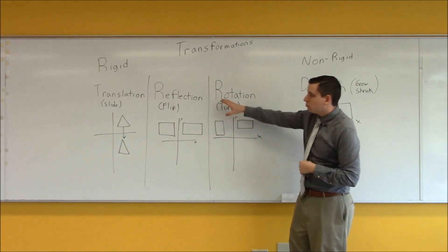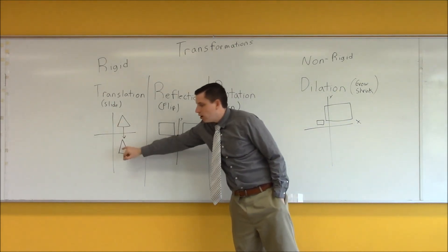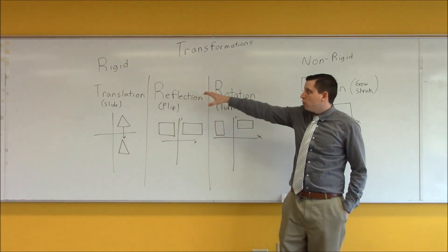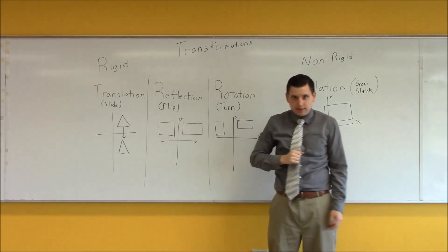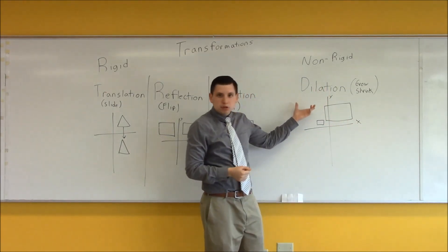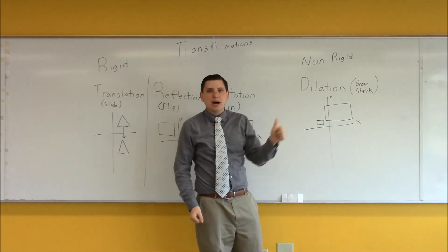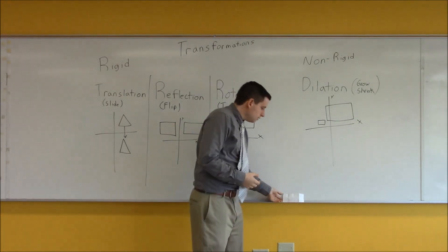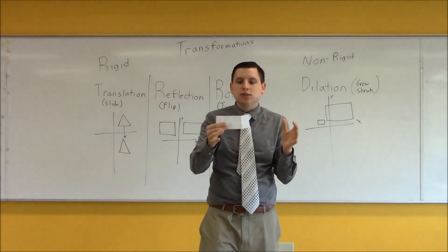Now, looking back at our rigid transformations, we notice that the size of all of the figures are still the same. Rigid transformations preserve both angle measurements as well as the side lengths. While non-rigid transformations preserve the angle measurements, but do not preserve the side lengths.